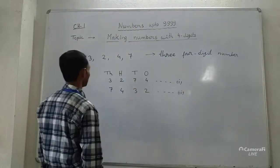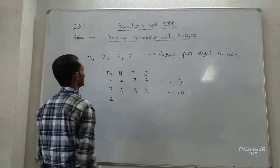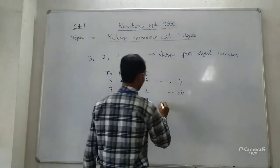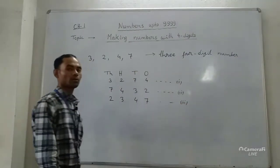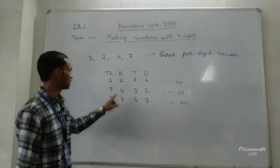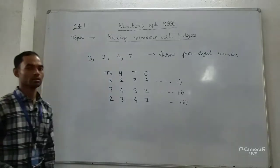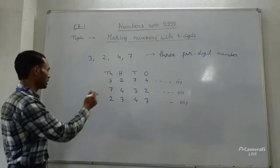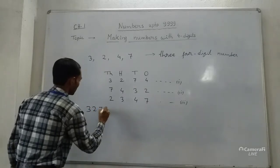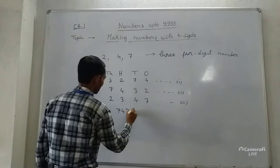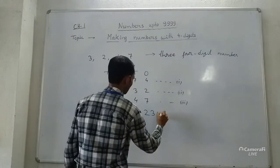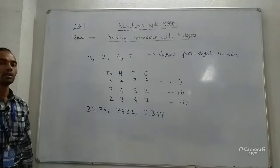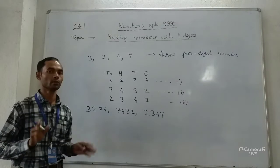In this way you can prepare another number. Suppose we take 2 at the 1000s place, 3 at the 100s place, 4 at the 10s place, and 7 at the 1s place. Then we get the third 4-digit number: 2347. So we have formed three numbers: 3274, 7432, and 2347. But we can prepare up to 24 four-digit numbers using these 4 digits.